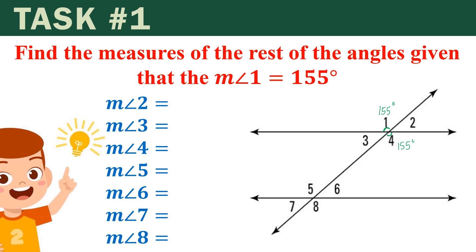Now let's proceed with angle 2. The relationship between angle 1 and angle 2 is linear pair. We can also have angle 2 and angle 4 — they are linear pair. So the sum of the measures of angle 1 and angle 2 should be 180 degrees. That means we're going to have 180 minus 155, and that would be 25 degrees. Since angle 2 is 25 degrees, then angle 3 is also 25 degrees.